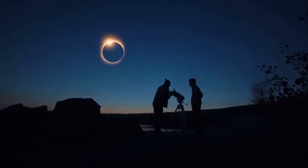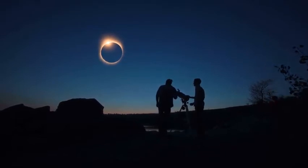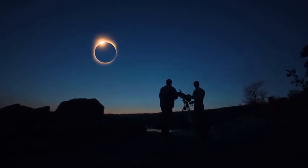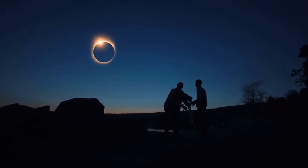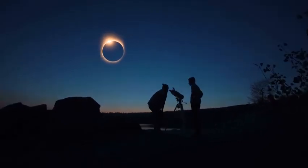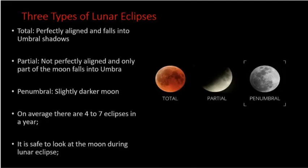If you have a pair of binoculars they will help to magnify the view and make the red coloration brighter and easier to see. A standard pair of binoculars — 7x35 or 7x50 — works fine. Remember to dress warmly and enjoy the spectacle. Now I want to explain two terms I used: umbra and penumbra.